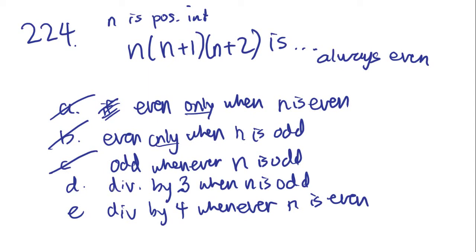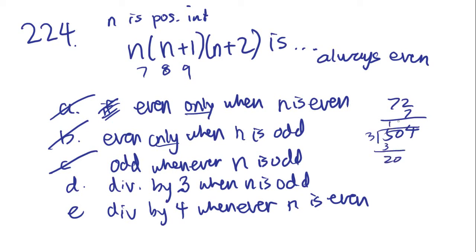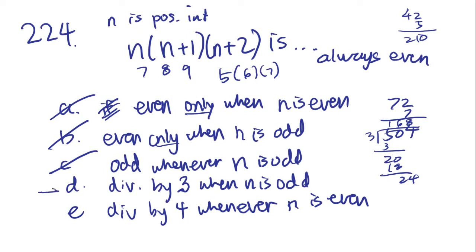D says divisible by 3 only when N is odd. If N is 7, we get 7 times 8 times 9, which is 504 — that's 168 times 3, so divisible by 3. If N is 5, we get 5 times 6 times 7, which is 210 — also divisible by 3. So D could be right. Let's check E.